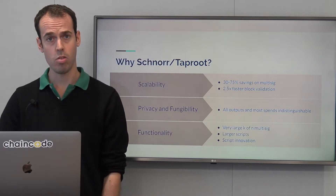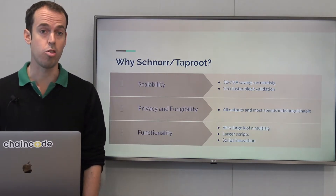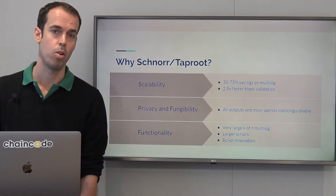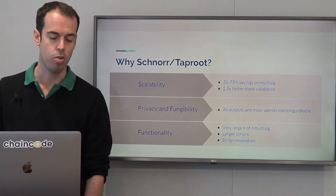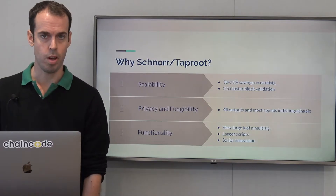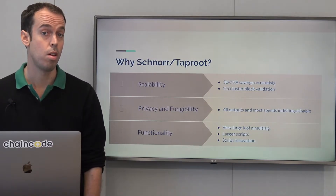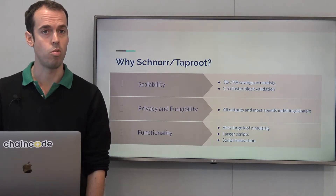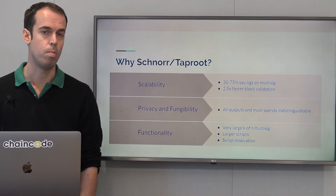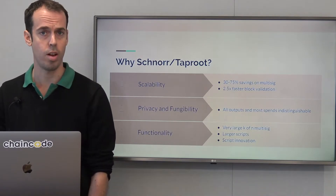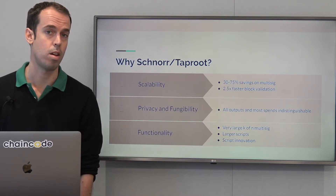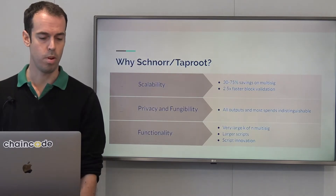Finally, Schnorr Taproot is a win for functionality. Because larger multi-sigs are now possible, more advanced contracts can be used on the Bitcoin network. And because scripts are placed in a tree and only the executed branch is revealed, much larger and more complex scripts can be used. As well as that, things like adaptive signatures, tweaked signatures, and blind signatures all open new possibilities.